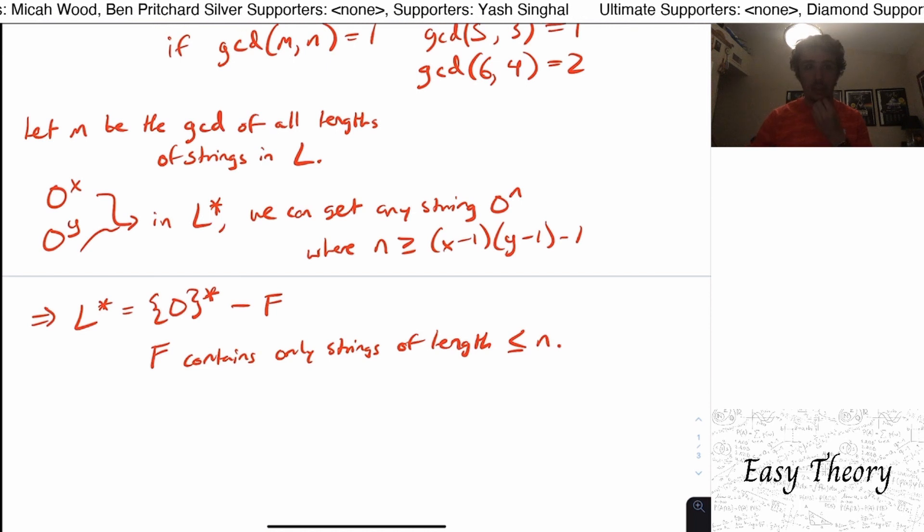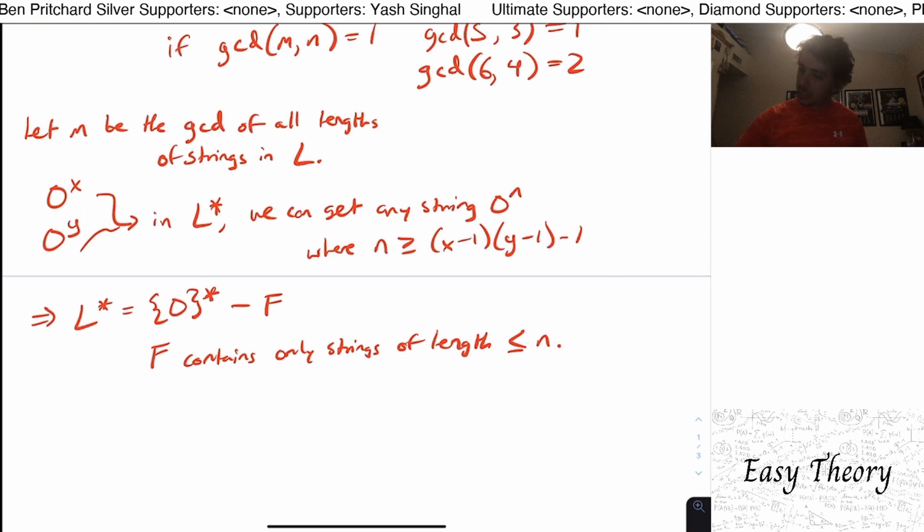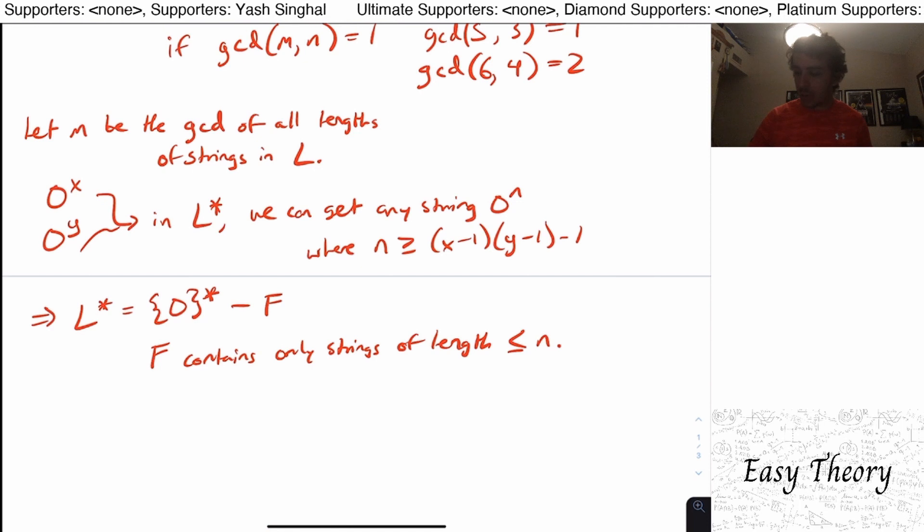So let's actually think about this. What we can do is we can notice that because zero star is regular, F is finite because this number itself is finite.